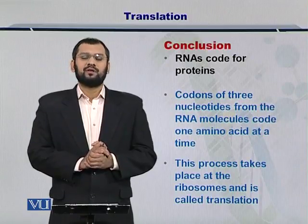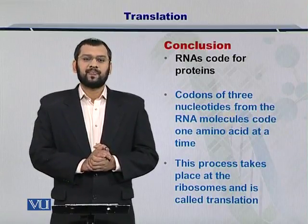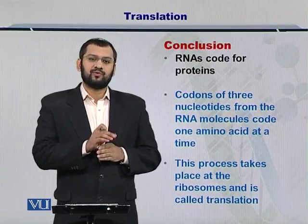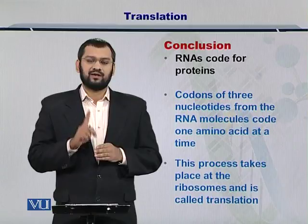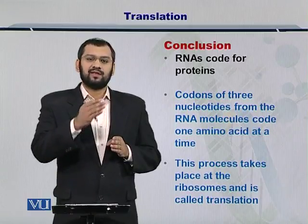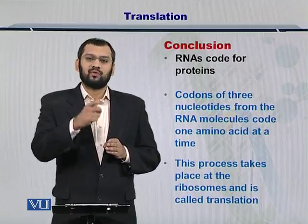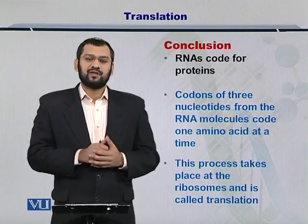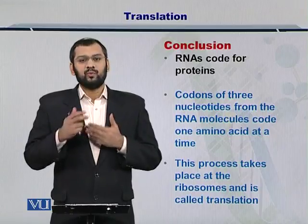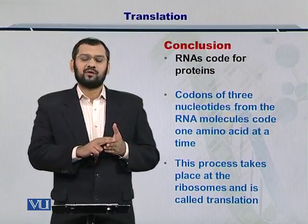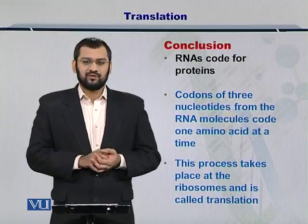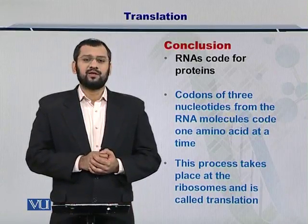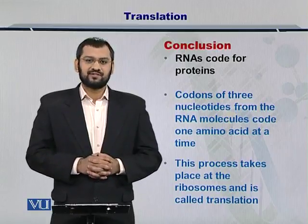In conclusion, RNAs code for proteins. Three nucleotides act at a time to code for one amino acid at a time, and then the next three nucleotides, or codon, code for another different amino acid. You can look up the codon table to know which amino acid will be produced if you have the sequence of an RNA molecule. This process takes place at the ribosomes and is called translation. Thank you very much.